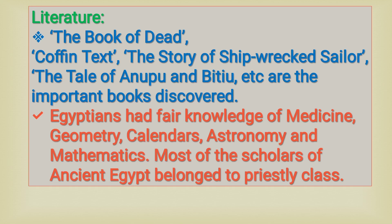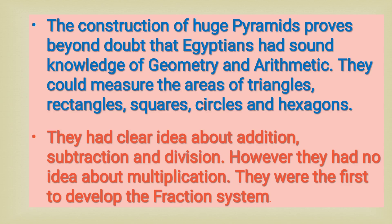Literature: They produced many books like the Book of Death, Coffin Text, the Story of the Shipwrecked Sailor, the Tale of Anupu and Bitu, etc. The Egyptians had fair knowledge of medicine, geometry, calendars, astronomy and mathematics. Most of the scholars of ancient Egypt belonged to the priestly class. The construction of huge pyramids proves beyond doubt that Egyptians had sound knowledge of geometry and arithmetic.